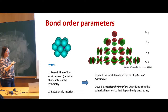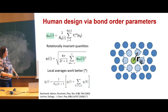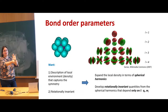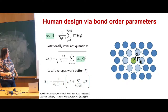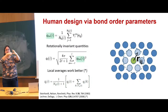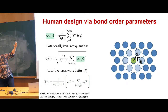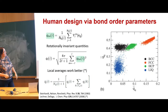I'll talk about bond order parameters as one of many ways to describe local environments. The idea is a local description of the environment around a particle that captures the symmetry. As a physicist, if I have a local environment with possible symmetry, one would expand this in terms of spherical harmonics. People took the local density of particles around a particle, expanded in terms of spherical harmonics, then created quantities which are rotationally invariant. For every spherical harmonic L, you get an order parameter describing how much of that symmetry is around the particle — L equals 2, 3, 4, 5, 6, and so on.